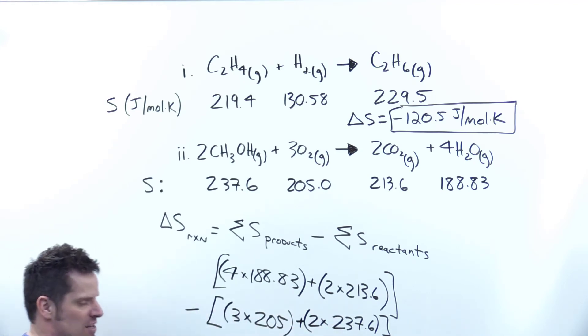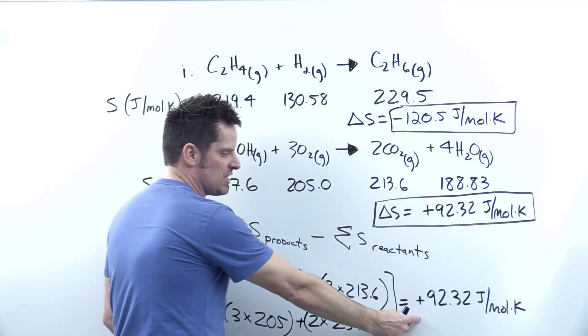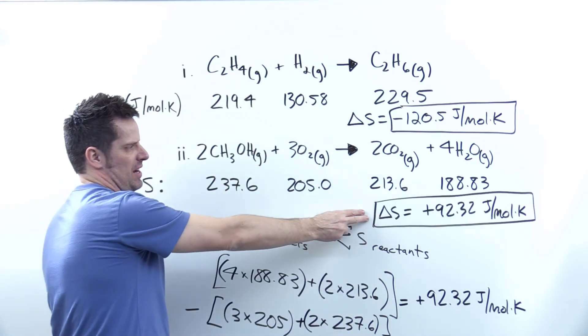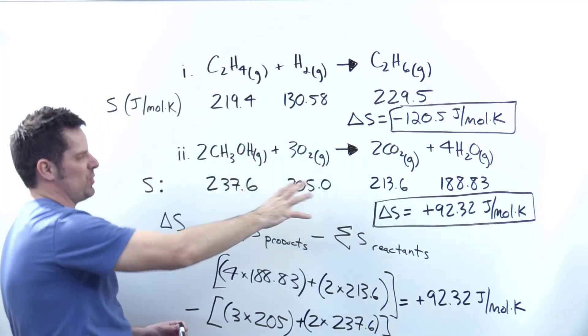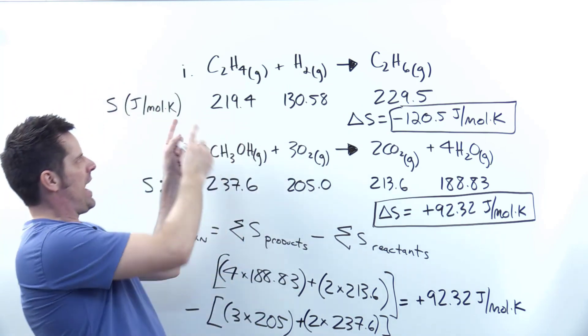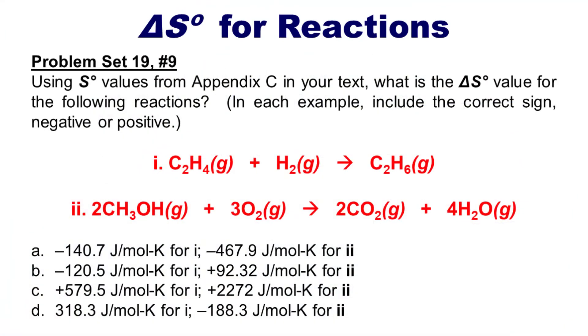When you do this, be very careful doing it into your calculator. Use parentheses, use multiple steps if you need to, to make sure you get it correct. When I was all done doing this, I ended up getting positive 92.32 joules per mole Kelvin, which I wrote up here as the delta S for reaction II. So here are my two answers: negative 120.5 for reaction I, and positive 92.32 for reaction II, which lines up with answer B.